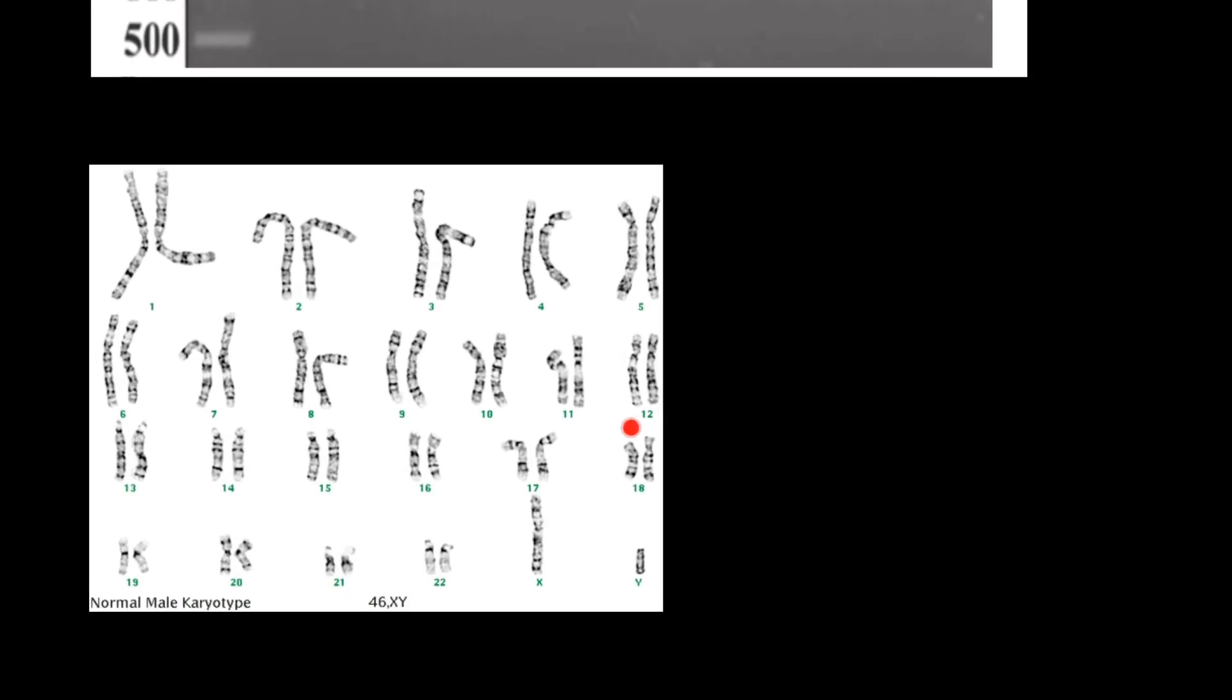Take a look. This is human karyotype, so we have 23 pairs of chromosomes. Most of them are homologous, and we have two non-homologous chromosomes, which are X and Y chromosomes. This is male karyotype because X and Y chromosomes are present here.